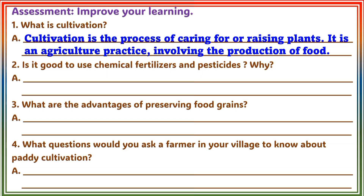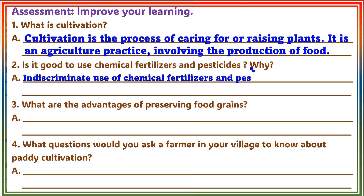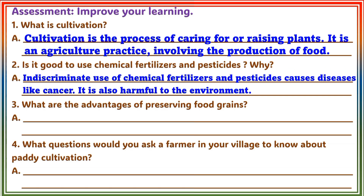Question 2: Is it good to use chemical fertilizers and pesticides? Why? Answer: Indiscriminate use of chemical fertilizers and pesticides causes diseases like cancer. It is also harmful to the environment.